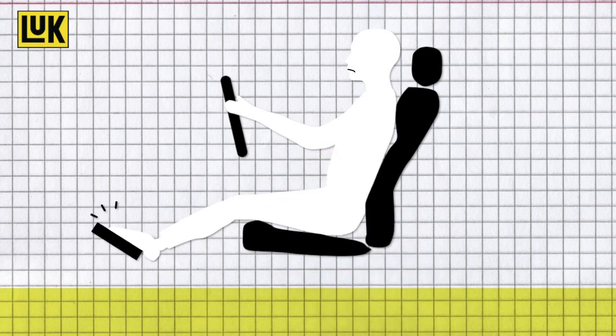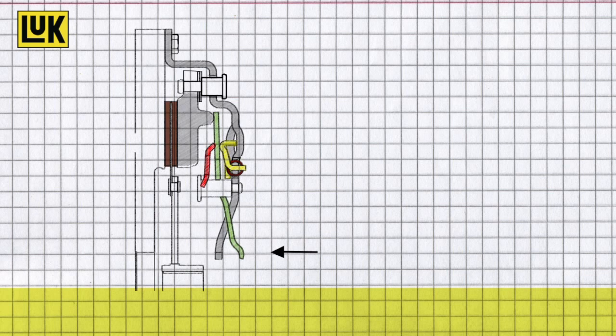Thinner clutch lining results in increased actuation force. To compensate for this effect, LUKE developed the self-adjusting clutch, SAC.